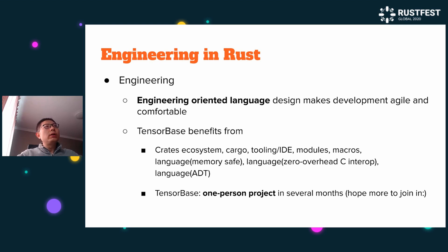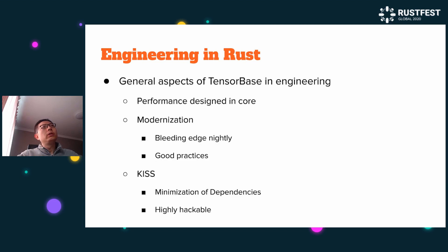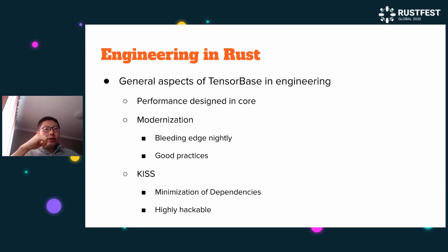Rust is great. TensorBase benefits from the various parts of the Rust ecosystem. One thing I want to say is that TensorBase is a one-person project built in just several months. Without the engineering power of Rust, this cannot be achieved. In TensorBase, we first prioritize performance at the core, then do modernization as much as possible, and then aim to keep it simple — so it's highly hackable.